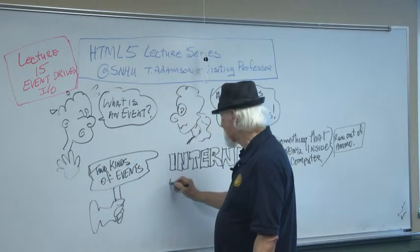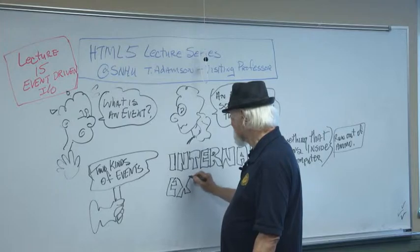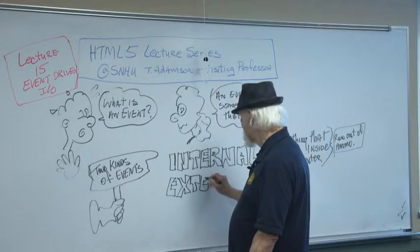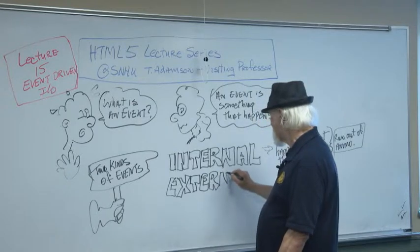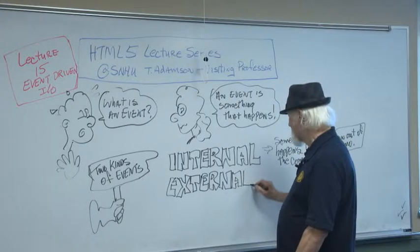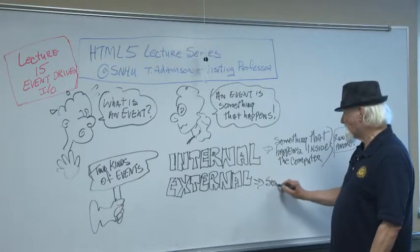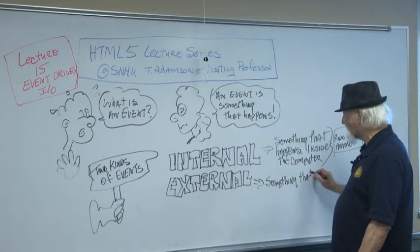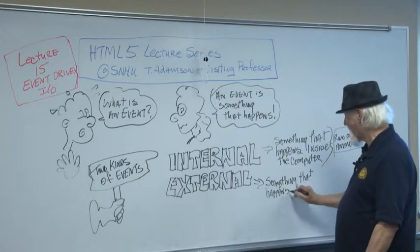The other kind of event that you might expect that we would have is an external event. It's an external event, and an external event is something that happens outside the computer.